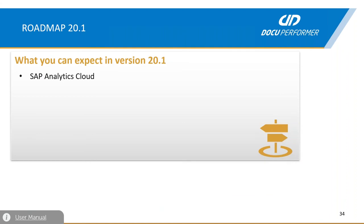That's it about our improvements. Now let me give you a watch-out for what you can expect in the next release 20.1. First of all, we are proud to announce that in future we will be able to support SAP Analytics Cloud — you will be able to document and analyze your stories. Furthermore, we are still working on our BO where-used analysis, and in future you will be able to search the coding of certain reports via a string search.